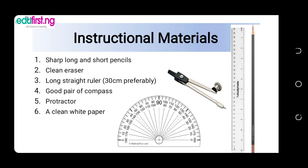Before good construction work can be carried out, you need some materials. First, you need both long and short pencils. The short pencil will be on your compass while the long pencil will be for ruling lines. Then you need a clean eraser, a long ruler — I always recommend a 30cm ruler — a good pair of compass, and a protractor, because sometimes we use the protractor to measure and verify angles. Finally, you need a clean white paper.